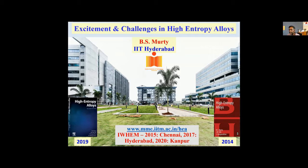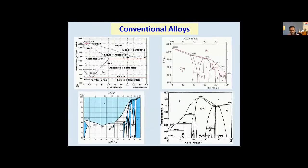Just to give you an idea — I am a metallurgist. What you are going to hear mostly is about alloys. In metallic materials, we use this term 'alloy' very frequently. Whenever two or more metals are brought together, we call it an alloy. Most of these alloys can be understood by looking at phase diagrams. What you see in front of you here are four different binary phase diagrams. On the left top you have a typical iron-carbon phase diagram.